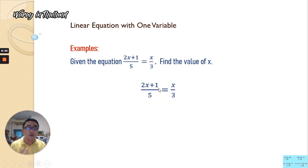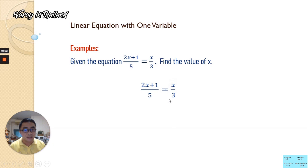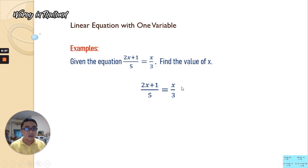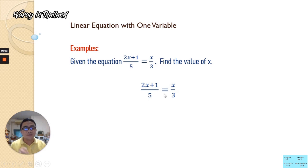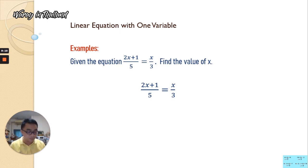Alternatively, if you introduce the LCM, which is 15, you multiply 15 on the left-hand side and 15 on the right-hand side, then simplify: 15 divided by 5 is 3, and 15 divided by 3 is 5. The result is the same, but it takes two steps. Cross-multiplication is only one step, so it's easier.